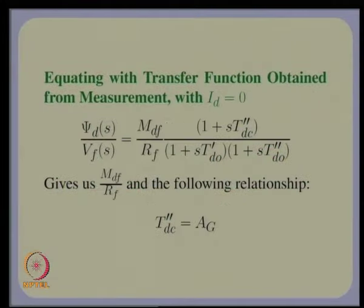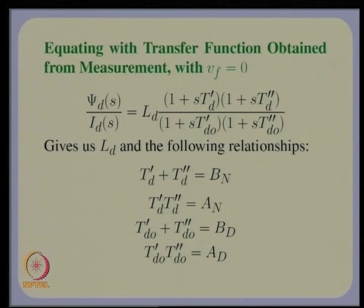The basic idea is to back-calculate the basic parameters from the measured standard parameters so we can use our model in realistic studies. However, if we use only one measurement, we have a problem: the number of basic parameters exceeds the parameters obtained from measurements. What we obtain from measurement are simply L_d, T_d', T_d'', T_d0', and T_d0''.